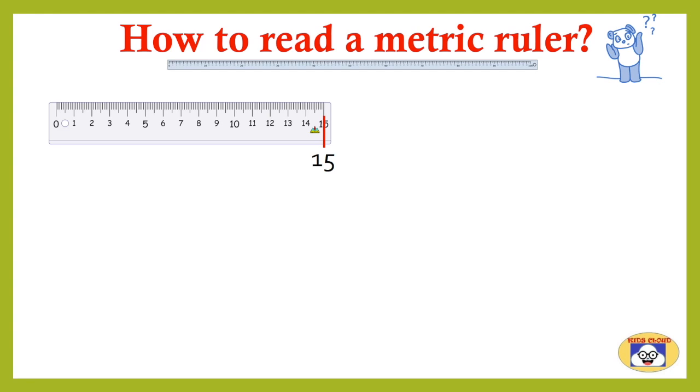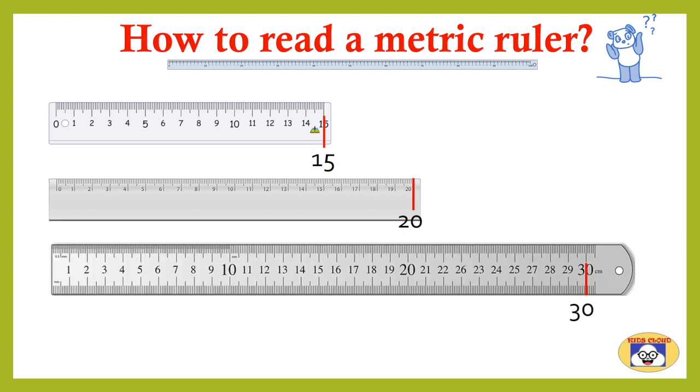Another one which ends with 20, and the third one with end mark of 30. So what do these numbers indicate? What else do you find on these rulers?